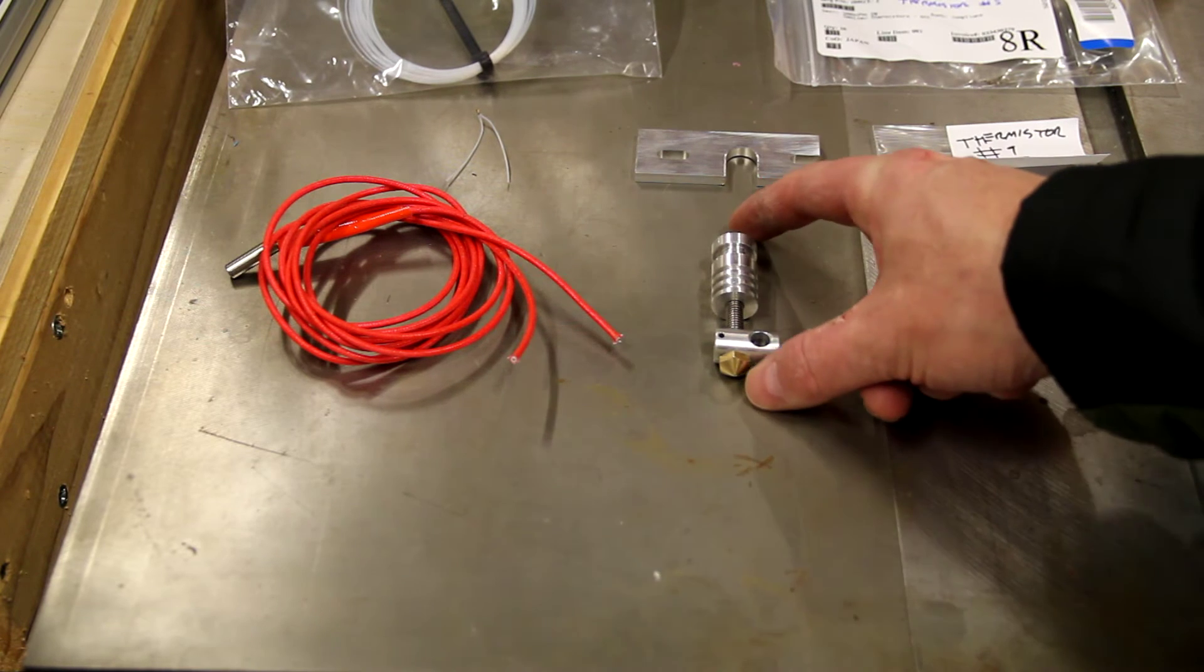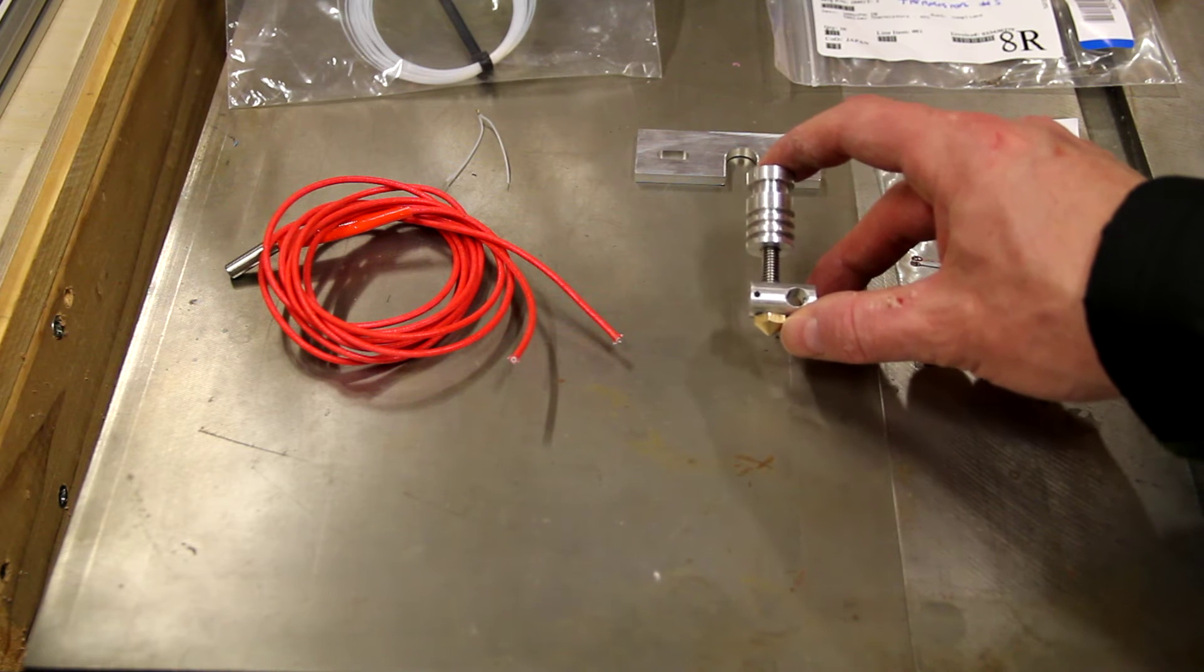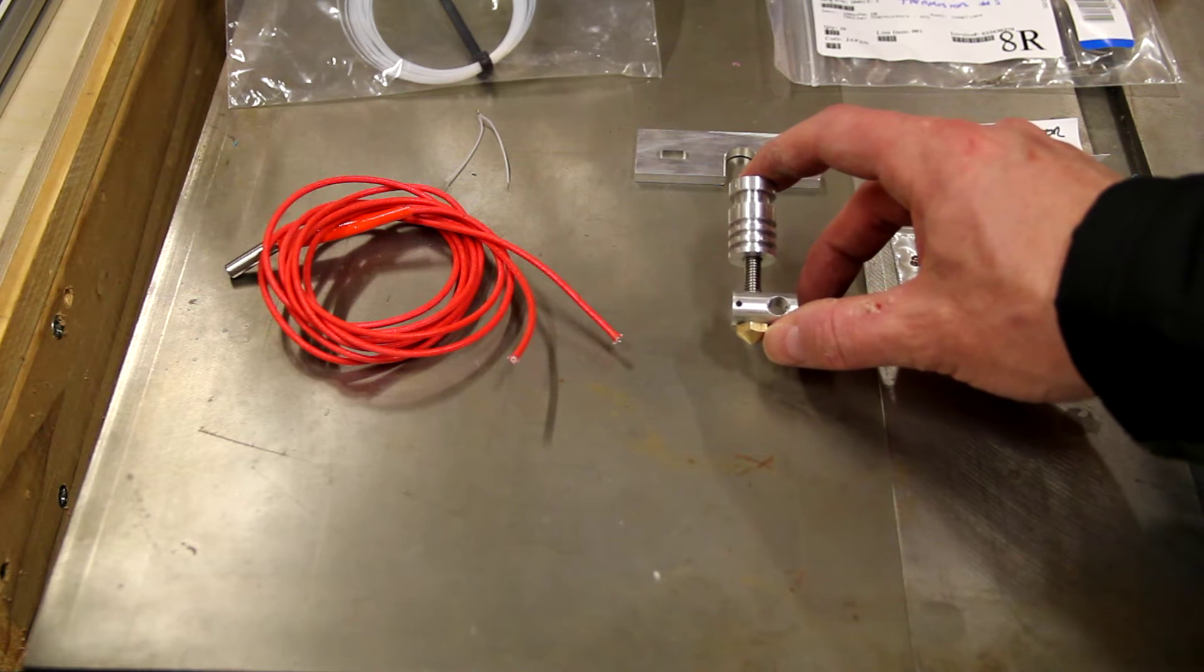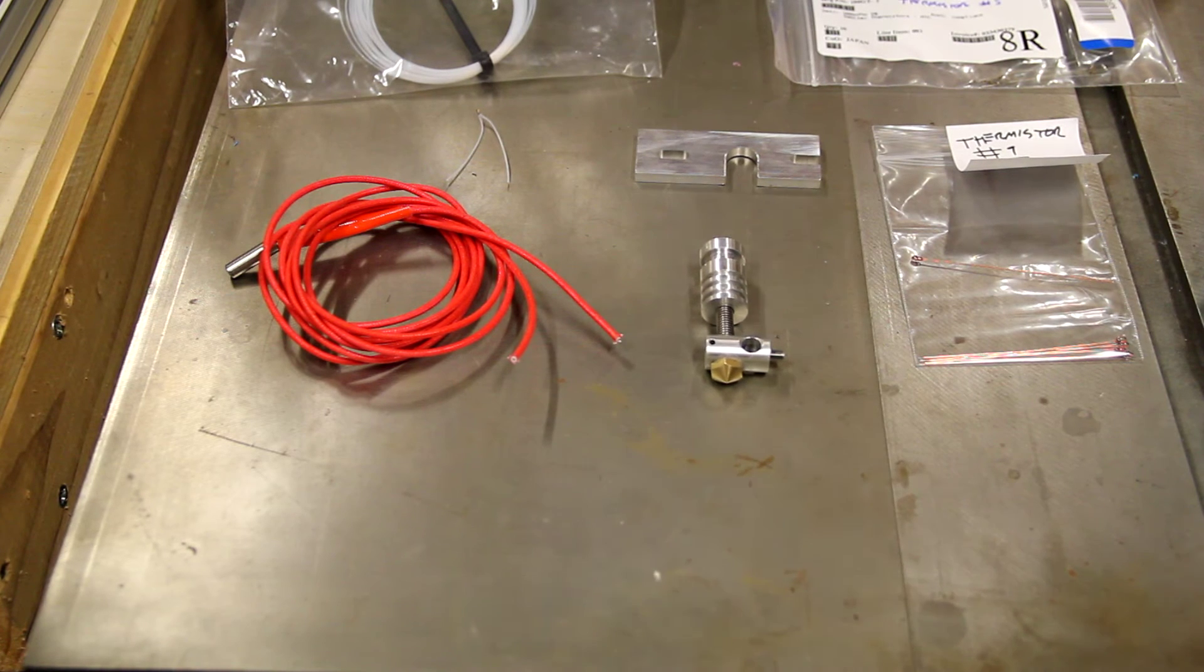However, when you do order it for $35 US or so, $38 Australian with shipping, this right here is all you get in the package and that's something that I felt was really important to let you guys know before you jump into this that you are going to have to source some parts from other places. Now 3D Industries does have a thermistor that they can include, that's also on their website, but the rest of this stuff that I have arrayed here they don't have and I want to just go over some of that real quick.